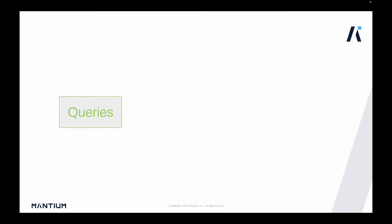Imagine you have customer queries — when someone makes an inquiry to customer service, say at a bank, it's always driven by a purpose or intention. To make things easier for the customer service operator, you can use a customer intent classification system that classifies the intent. You can then integrate this with other applications. The AI classifier takes the incoming query and determines the intent to generate a label.